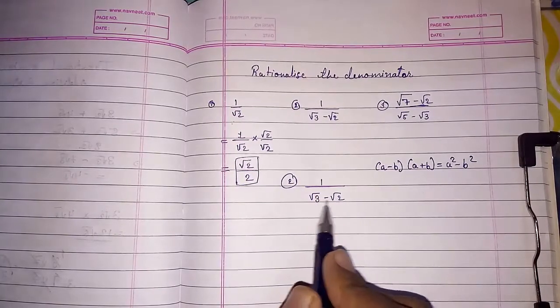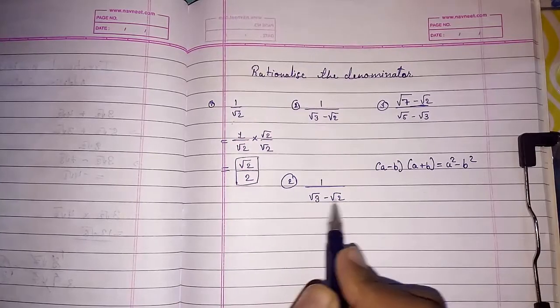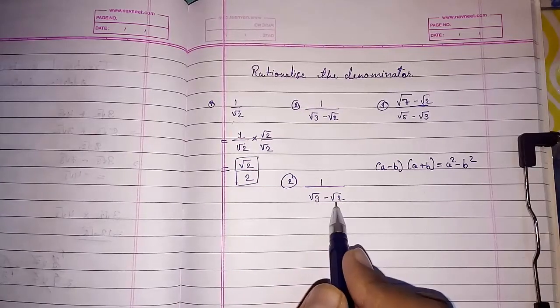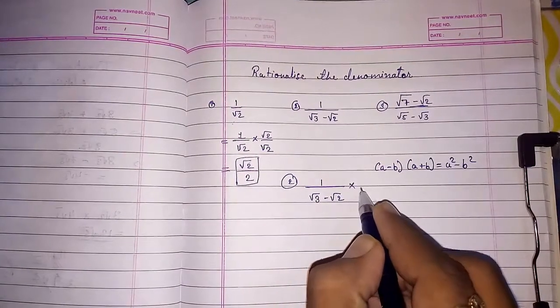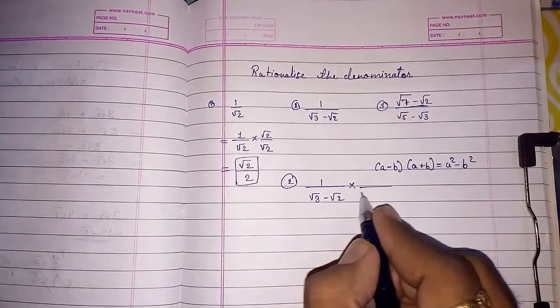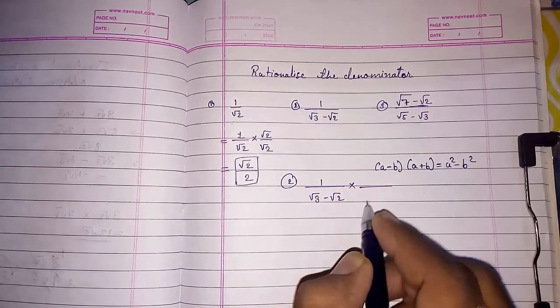So, here also we will multiply something like that and we will get two squares. So, when this number are getting square, root will be automatically cancelled. So, we are going to multiply this. Minus is there. So, plus. If plus will be here, then we will multiply with minus.